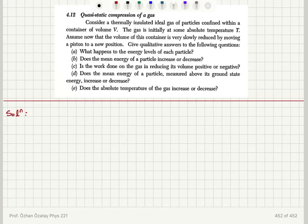Quasi-static compression of a gas. Consider a thermally insulated ideal gas of particles confined within a container of volume V. The gas is initially at some absolute temperature T. Assume that the volume of this container is very slowly reduced by moving a piston to a new position. Give qualitative answers to the following questions.